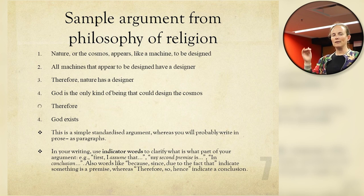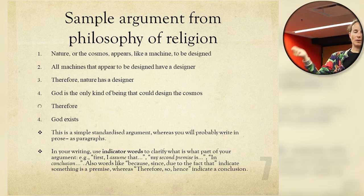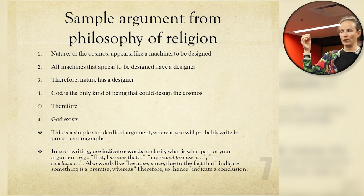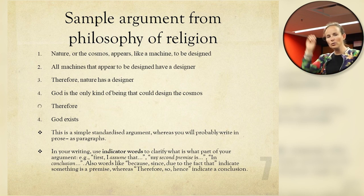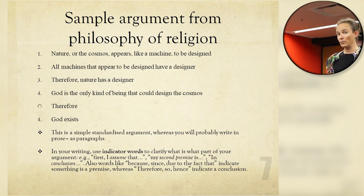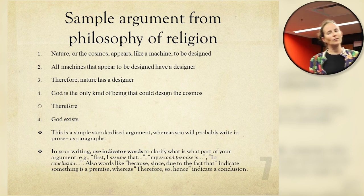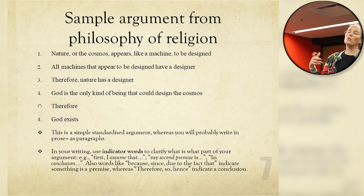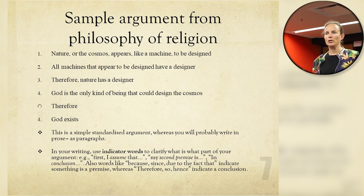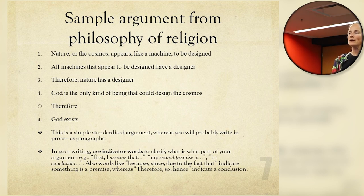In this kind of argument, you can see there are two levels of reasoning. You have the conclusion — God exists — and the main argument that nature has a designer and God must be the designer. Then you have evidence supporting the premise that nature has a designer. If you were to evaluate this argument, you would look at whether all the premises are true and whether all the inferences are either strong or valid. If you were to write this argument yourself, you would probably write it as a paragraph rather than in this kind of structured design, which is called standardization.